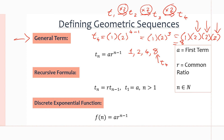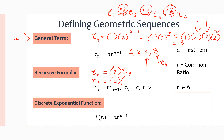Next, we have the recursive formula, which uses the previous term to calculate the next. The formula is: t(n) = r · t(n−1), meaning the term at position n equals the common ratio times the previous term. For example, to calculate t4 with common ratio 2: t4 = 2 × t3. Since t3 in our sequence is 4, we get 2 × 4 = 8, which is t4. This shows how the recursive formula works using the preceding term.